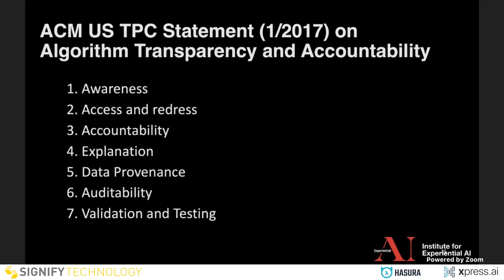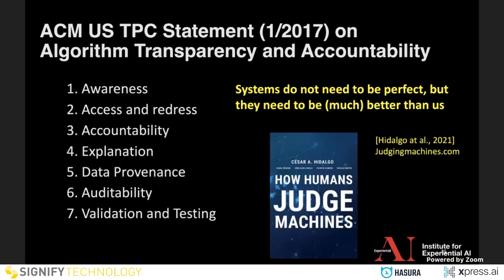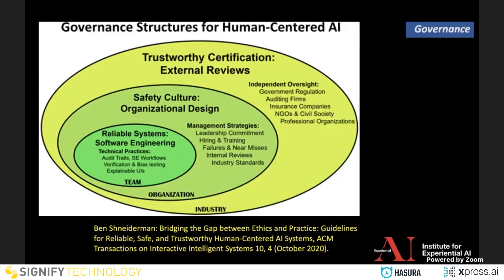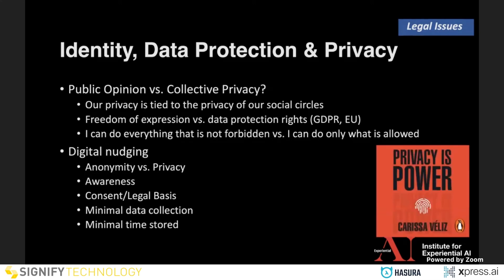Let me go to what we can do. Seven properties were proposed by ACM in 2017. Systems do not need to be perfect, but people expect much more from AI than what it can do — humans judge machines much harder than people. Some are already working on trustworthy AI software, and the question in the future will be how to develop software with the help of AI. We also have issues on data protection, identity, and privacy — including consent, how much data you collect, how long you store it.